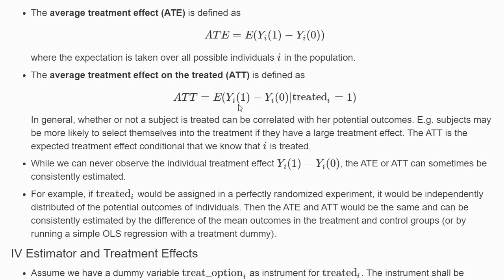In a perfectly randomized experiment, ATE and ATT are the same because there is no systematic difference between those who get the treatment or not — there is no individual decision to accept or reject it. One can estimate these average treatment effects simply by taking the difference in mean outcomes between the treatment and control groups, or equivalently by running an OLS regression with a treatment dummy, similar to the difference-in-differences approach discussed in chapter four.